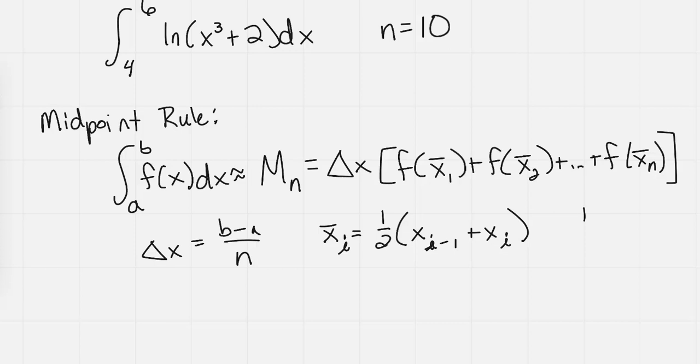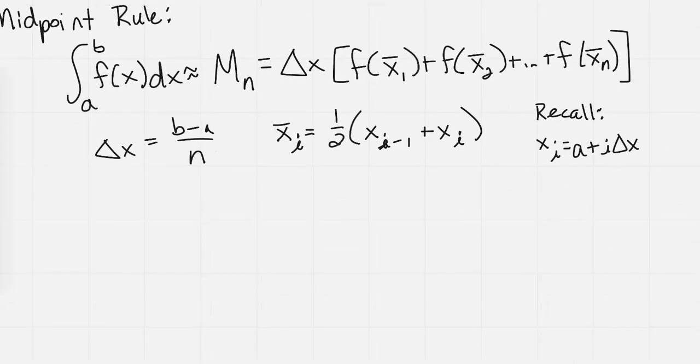I want to recall a little tidbit of information that will be helpful: x sub i is going to be equal to a plus i times delta x. So our delta x would be 6 minus 4 over 10, which is 2 tenths, equals 1 fifth.